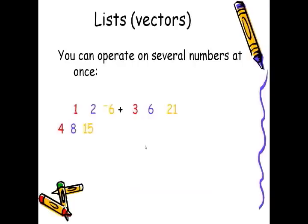Lists. Vectors. APL can operate on several numbers at once. Let's say that you have three additions to do. You don't have to say 1 plus 3, wait for the answer, 2 plus 6, wait for the answer, 6 plus 21, wait for the answer. You can do them all at once.